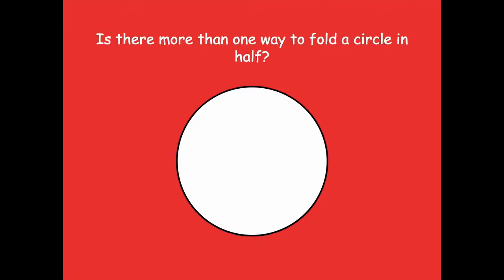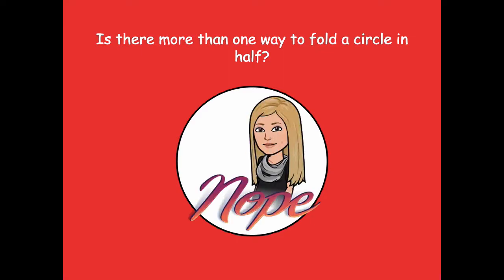Is there more than one way to fold a circle in half? No — no matter which way you fold it, the half is still going to look the same. When we did our rectangles, we folded like a hamburger, like a hot dog, and diagonally to look like two triangles. But when you fold a circle, whether you fold the top to the bottom or the right to the left, it's always going to look the same.